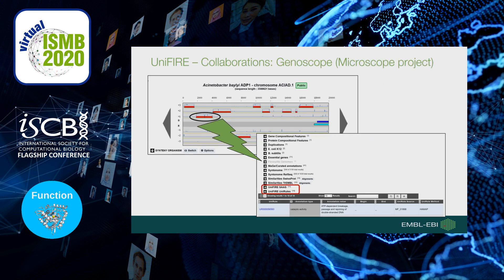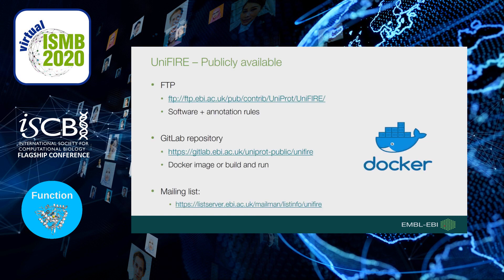As a use case example, the Genoscope team is using UniFire to annotate their own data based on SAS rules and UniRule rules. You can create functional predictions for your own protein data from UniRule and ARBA rules using UniFire, which is available on FTP and GitLab. UniFire is open source, open for collaboration, and available on a Git repository at the link shown here. You can build from source and run it, or simply follow the easy setup through a Docker image containing all dependencies. Well-described documentation is available, and there is a mailing list dedicated to user communications.